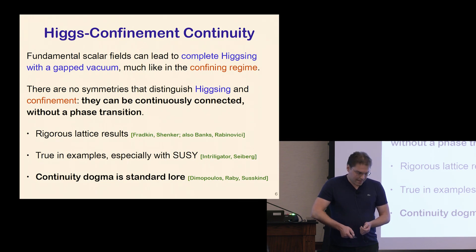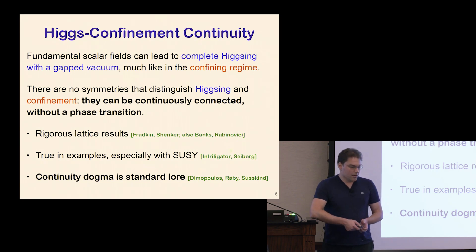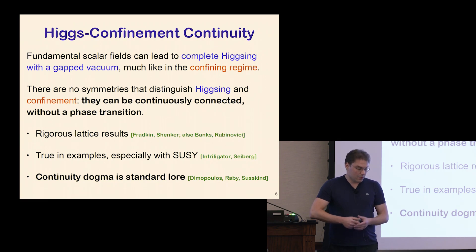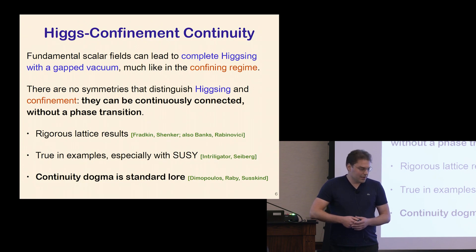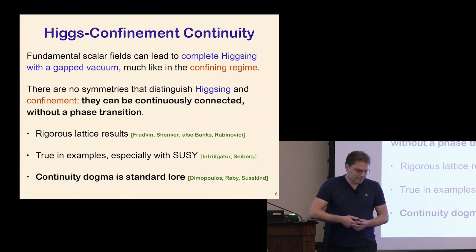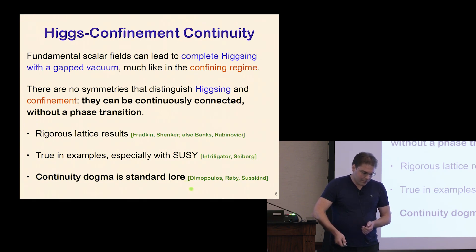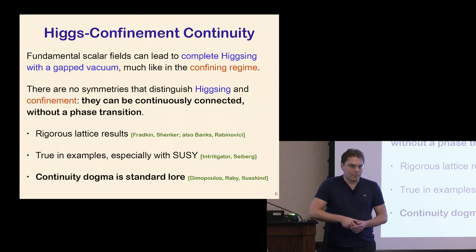In supersymmetric theories, where we can really explore the phases of interacting gauge theories very thoroughly, this was also seen to be the case — emphasized in the review by Intriligator and Seiberg on gauge theory phases in supersymmetric theories. There's ample evidence and a symmetry-based plausibility argument, basically elevated to standard dogma. This lore was called Higgs confinement complementarity by these authors; since complementarity has been used for many other things, I'll call it continuity.